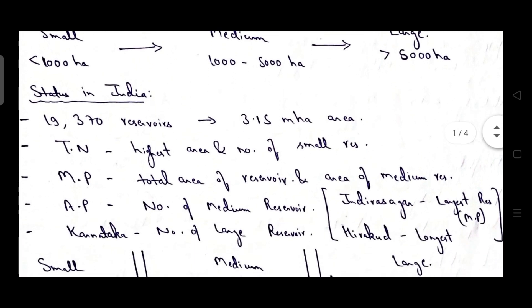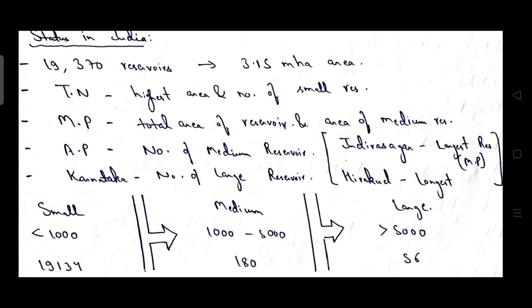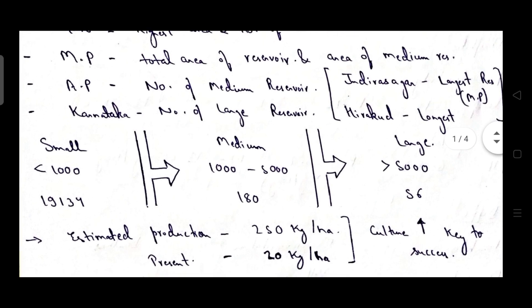Coming to status in India of reservoirs. So there are total 19,370 reservoirs with an area of 3.15 million hectare. From which Tamil Nadu has highest number of small reservoirs. Madhya Pradesh has highest total area of reservoir and total area of medium reservoir. And Andhra Pradesh has highest number of medium reservoir. And Karnataka has highest number of large reservoir. And Indra Sagar is the largest reservoir that is in Madhya Pradesh. And Hirakud Dam is the longest dam.